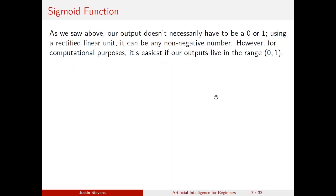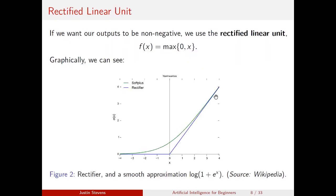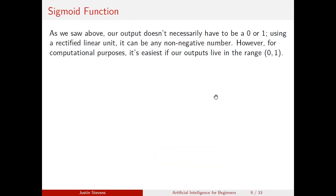In practice, if our outputs can be any real number — like 200 — then when we're making minute changes to weights, those really big values can add a lot of unwanted randomness. So we want our outputs to live in the range 0 to 1. The function we're going to use for the rest of the presentation is called the sigmoid or logistic function: sigma(z) = 1 divided by (1 + e^(−z)).